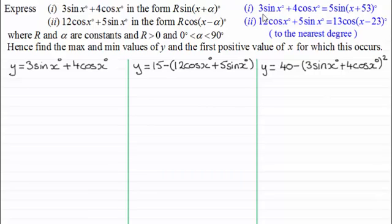I showed you that you could express something like 3sin(x) + 4cos²(x) in the form R·sin(x+α), and it turns out to be 5sin(x+53°). And similarly for 12cos(x) + 5sin(x), that turns out to be 13cos(x-23°) when we express it in the form R·cos(x-α). And both these angles, 53° and 23°, are given to the nearest degree.